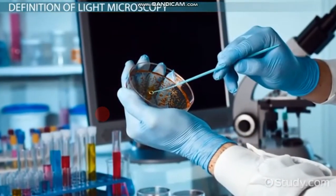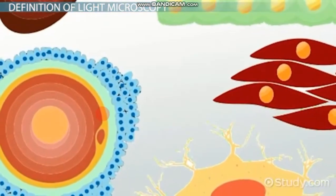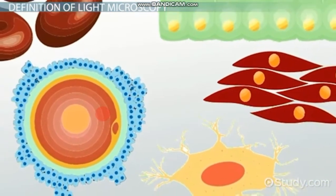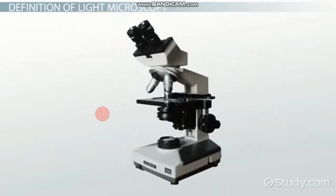Because light needs to pass through the sample, it must be either very small or very thin. Most cells, bacteria or otherwise, are both small and transparent, and so light can easily pass through them.